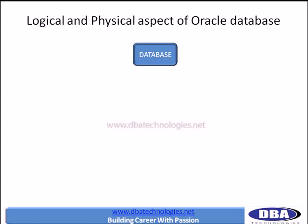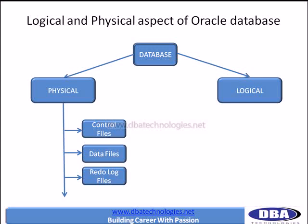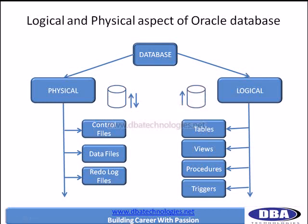Now let's look at the physical and logical aspects of the database. The physical aspect includes control files, data files, and redo log files — these can be viewed whether the database is up or down, because they are physical files on the file system. The logical aspect includes tables, views, procedures, triggers, synonyms — every single object of a database. You need the database up and running in order to access any table, view, procedure, trigger, or any object within the database.